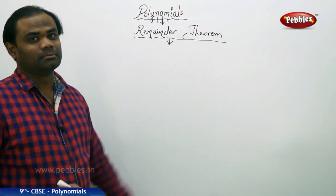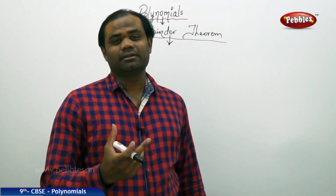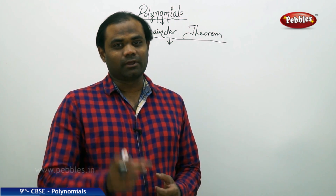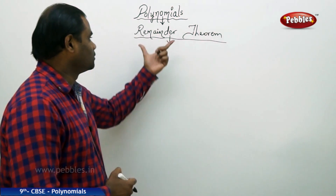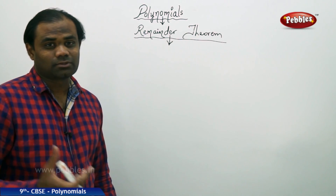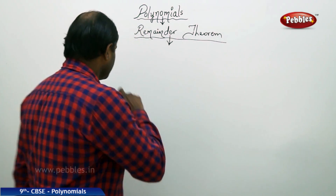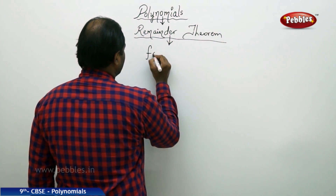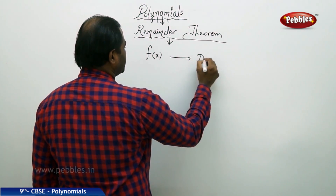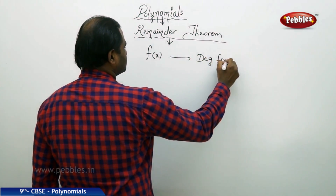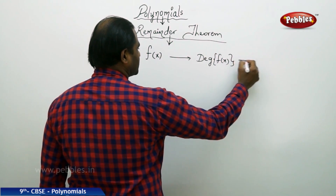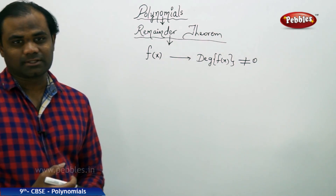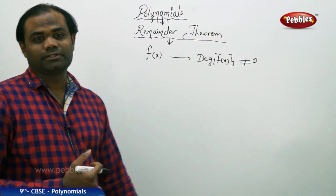The remainder theorem is dedicated to identifying the remainder of a polynomial divided by another polynomial — that is the first thing we note from the theorem called the remainder theorem. If I take a function f(x) with the condition that the degree of f(x) is not equal to zero, then let's see what the theorem states for this function f(x).